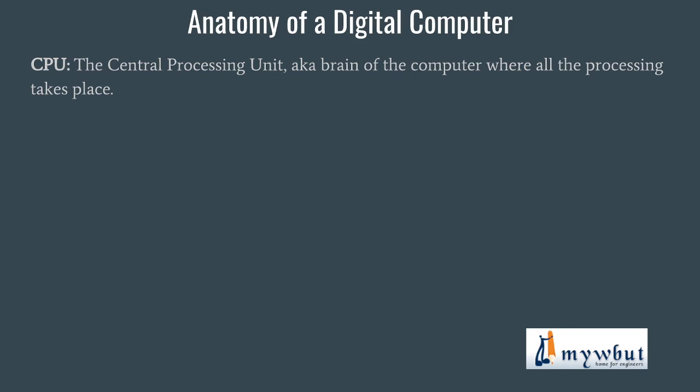Those components are the processing unit, memory, input device, output device, and so on. The central processing unit is actually the most essential part of any computer — it acts as the brain of a computer where all the processing takes place. Even the CPU is divided into smaller parts: the ALU or Arithmetic and Logical Unit, and the CU or Control Unit.